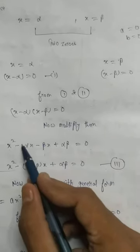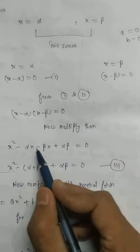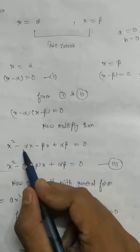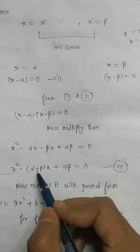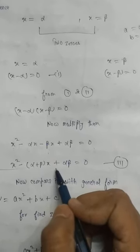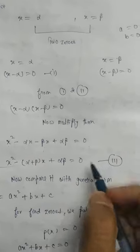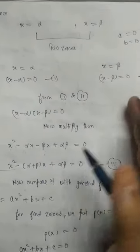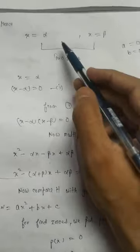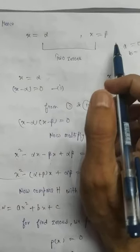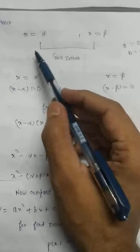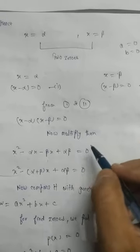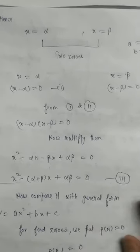Taking −x common from the middle two terms gives: x² − (alpha + beta)x + alpha·beta = 0. This is equation number 3. To summarize: starting from two zeros alpha and beta, I formed equations 1 and 2, multiplied them, and simplified to get equation 3.